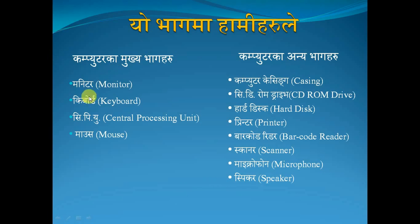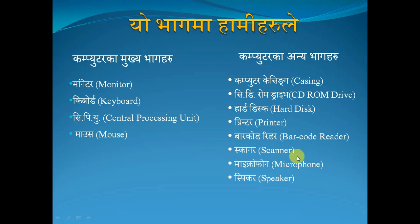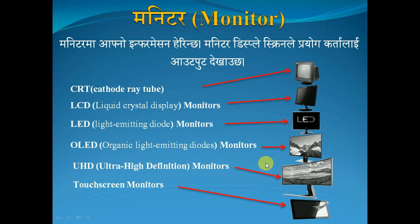Monitor, keyboard, CPU, mouse — these are the main parts of a computer. Also: casing, CD-ROM drive, hard disk, printer, barcode reader, scanner, microphone, and speaker — these are all parts of the computer.